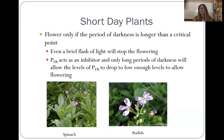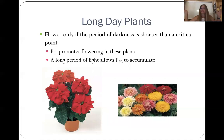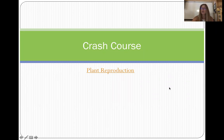An example of a short-day plant is spinach or radish. Long-day plants flower only if the period of darkness is shorter than a critical point — in the Northeast where nights are really short and daylight goes until 10 o'clock, those are prime conditions for long-day plants. They need a short night and a long day in order to flower. PFR promotes flowering in these plants — a long period of light allows PFR to accumulate and therefore allows flowering. Watch the Crash Course video on this; Hank will help you review anything you missed in this lecture.